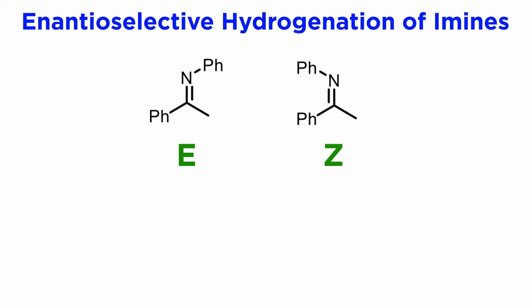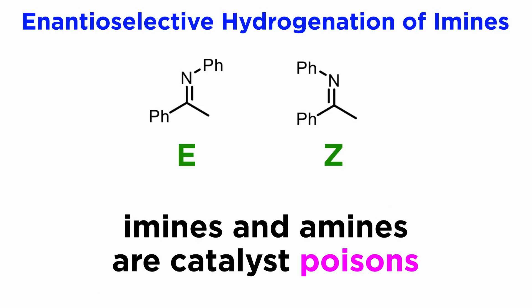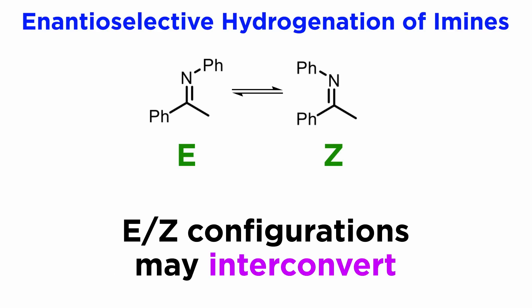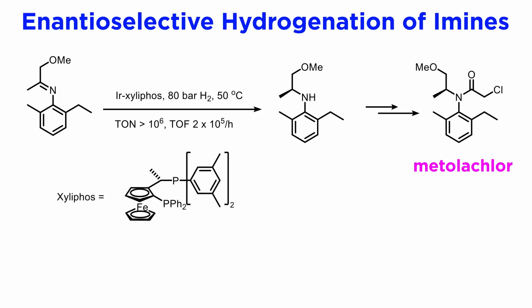Moving on from ketones, enantioselective hydrogenation of imines follows similar criteria. There are, however, some complicating factors. Many imines hydrolyze readily, so in addition to amines one gets alcohols as products. Imines, and especially the product amines, actually do bind the catalyst but not in a productive way, and tend to be catalyst poisons. Also, imines exist in two alternate configurations, E and Z, which may or may not interconvert at rates commensurate with the reduction, and may react at different rates and show different enantioselectivities. Therefore, this is a field of active research, and general catalysts have not yet emerged which give the same exquisite enantioselectivities as with ketone hydrogenation. However, effective hydrogenations have been developed and applied.